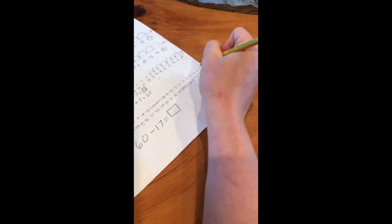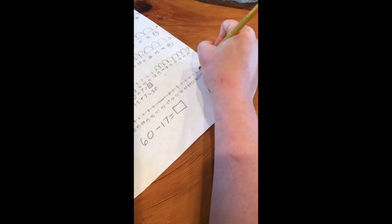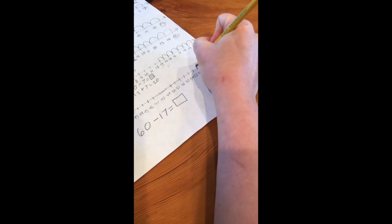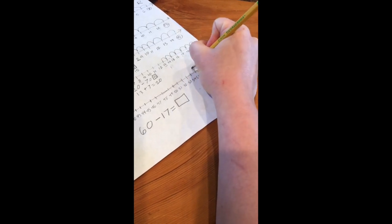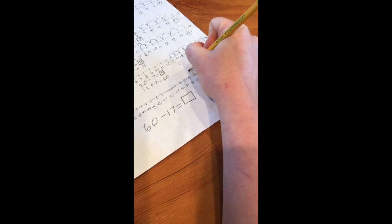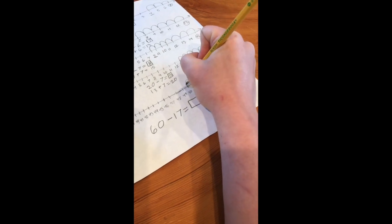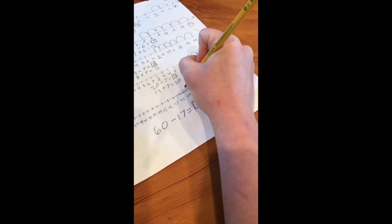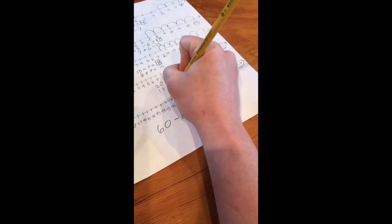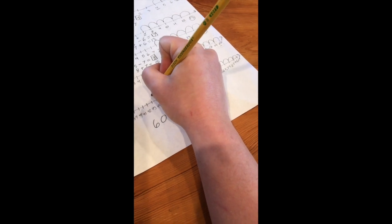I'm gonna turn my paper. Counting backward: 1, 2, 3, 4, 5, 6, 7, 8, 9, 10, 11, 12, 13, 14, 15, 16, 17.